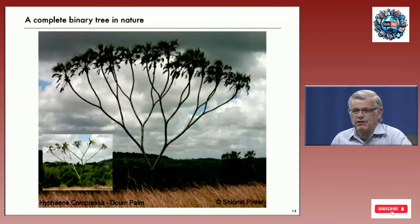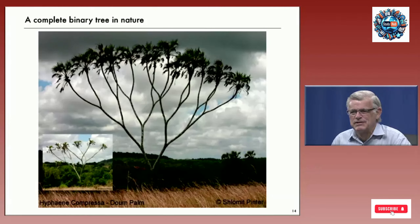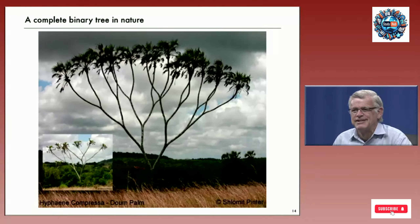A complete binary tree actually happens in nature. Here's an example of one that goes 1, 2, 3, 4 levels at least — so 16 bushes at the end there.